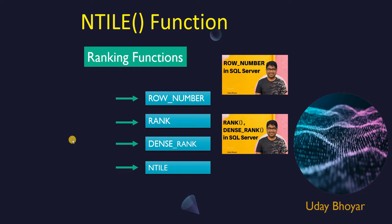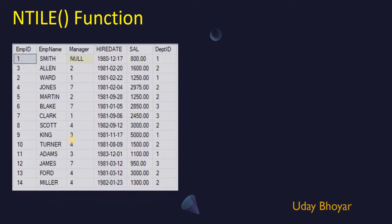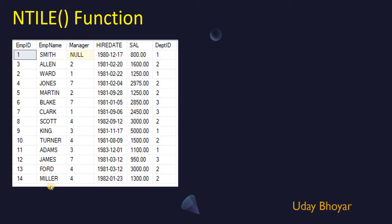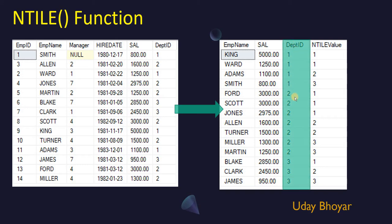Now let's come back to the NTILE function and try to understand it using an example. This is an employee table which contains employee details — employee name, salary, department IDs and so on. Here is a result set pulled using the NTILE function where we can see the department IDs are sorted in ascending order, and there is another column, NTILE value, which has created certain groups by dividing rows into equal parts for those department IDs.